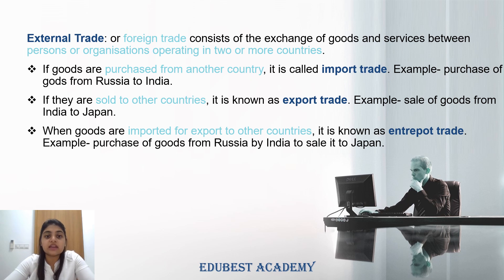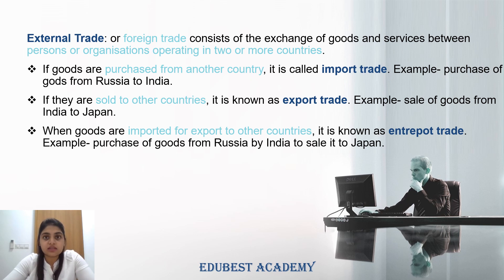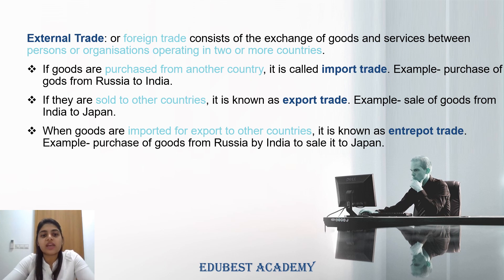Import trade is when we purchase goods from another country — for example, if India purchases goods from Russia, that is India's import trade. Export trade is when we sell goods to another country — for example, if India sells goods to Japan, that is its export trade. Entrepot trade is when we import goods from one country for the purpose of exporting them to some other country. For example, goods purchased from Russia are then sold back to Japan — that is an example of entrepot trade.